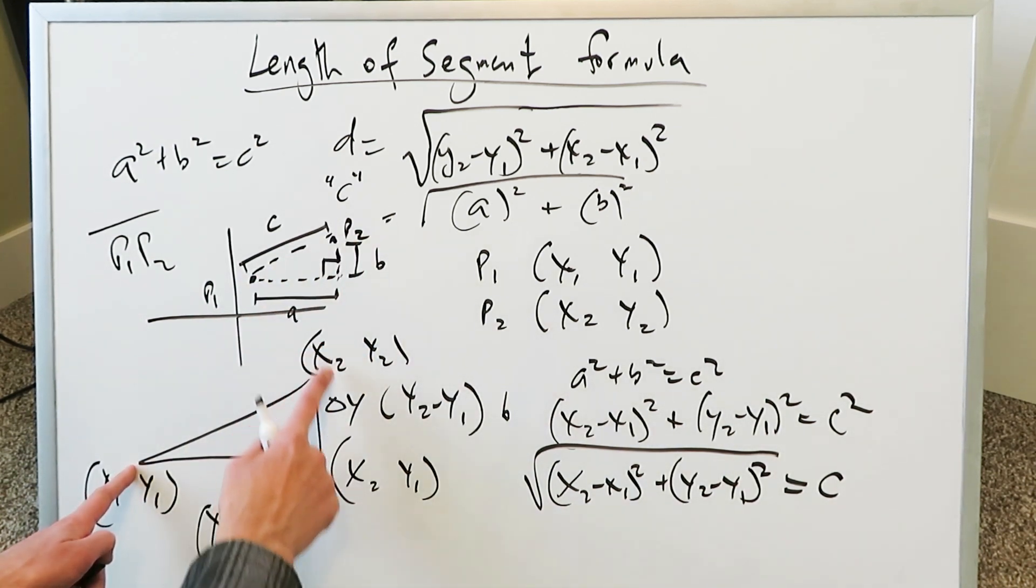The distance from here to here, there's no change in y but there's a change in x. You do your large number minus your small number, x2 minus x1. Along here, you have no change in x but you have a change in y. You do your large y value minus your small y value: y2, y1, x2, x1, with a difference of the two feeding in and gives you the length of segment formula.